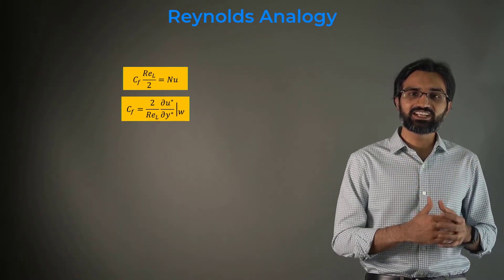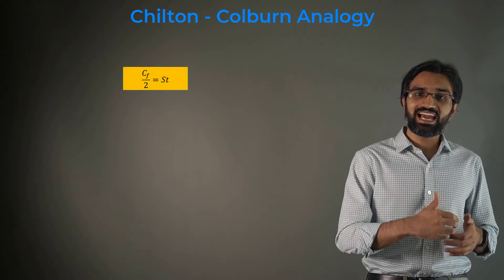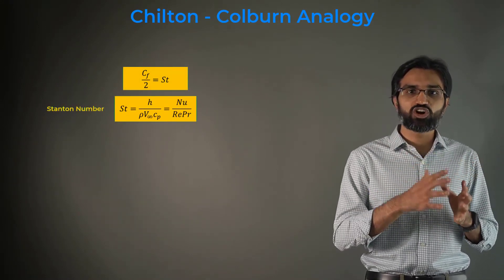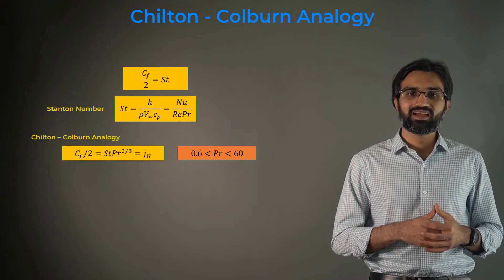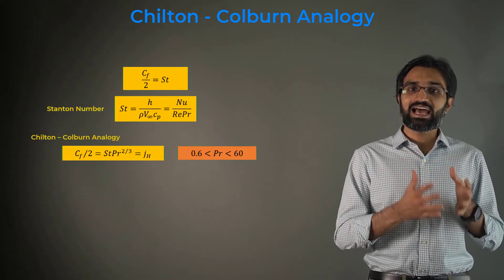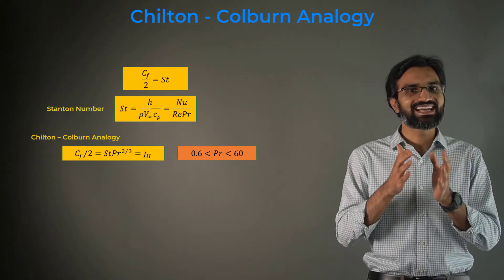This equation is rewritten in terms of the Stanton number. The analogy can be expanded to a wider range of Prandtl numbers by adding a small correction factor. The following Chilton-Colburn analogy is applicable for Prandtl numbers ranging between 0.6 and 60.